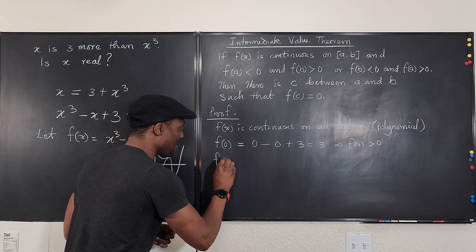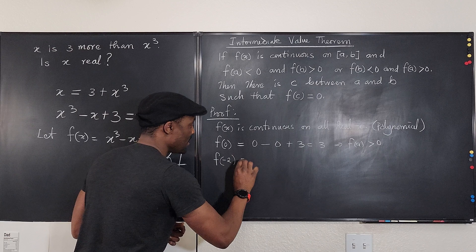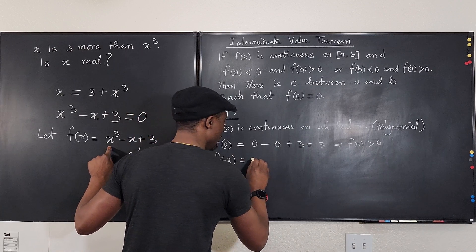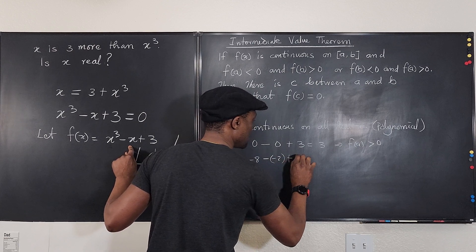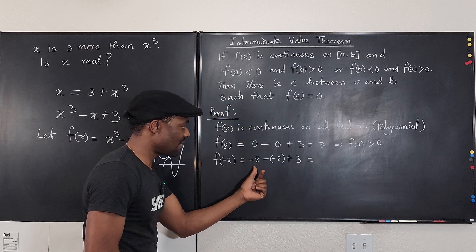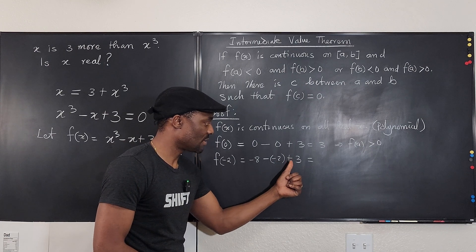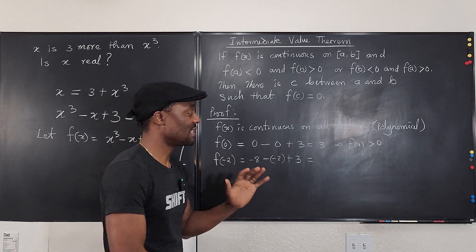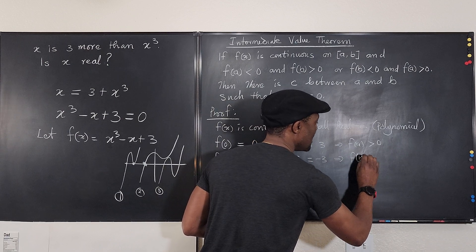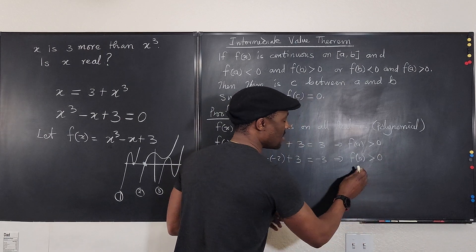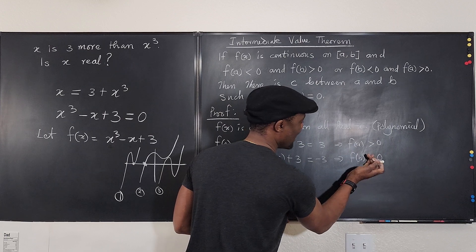So we're going to do f(-2) will be equal to negative two cubed, that's negative eight, minus negative two plus three. This gives me negative eight plus two plus three, that's negative eight plus five, that's negative three. This implies f(b) is less than zero. Come on, less than zero.